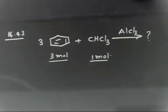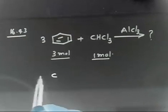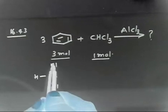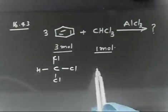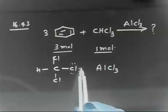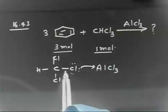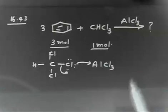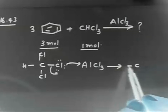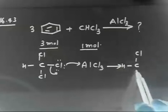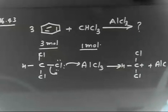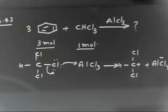Let me discuss the solution. So you have CHCl3. What you do with CHCl3 is use AlCl3 as a catalyst — it acts as a Lewis acid. The bond breaks, and this is the same as Friedel-Crafts alkylation. You will have CHCl2+ and AlCl4−; I am not interested in the AlCl4−.